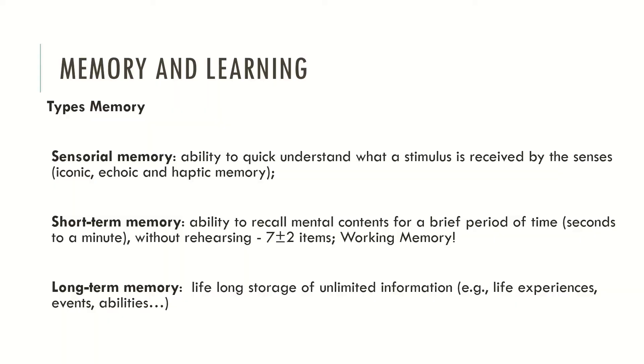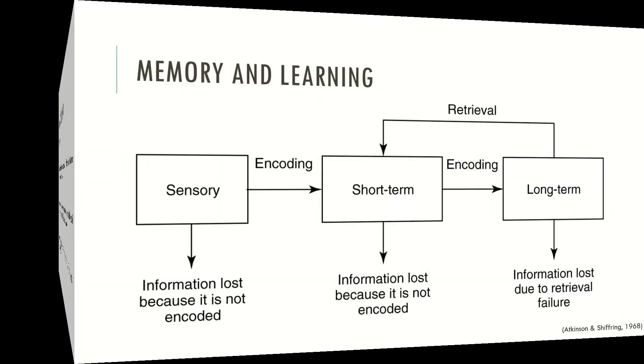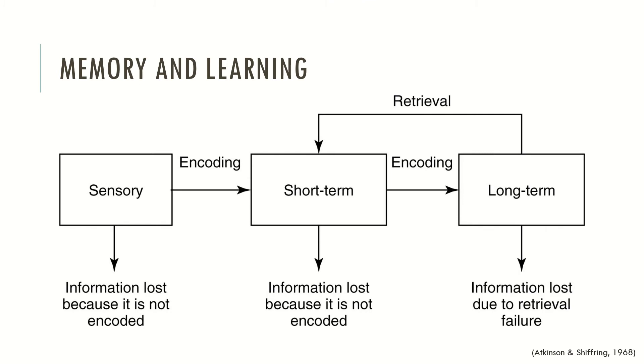Memory is a very important neurocognitive process because without memory, we would not be able to recall and remember all the things that made us who we are. For example, Alzheimer's disease is a condition where individuals start to lose their memory abilities, typically affecting episodic memory — individuals start to lose the ability to recall things from their life and can't even recognize their spouse. We can look to the model of Atkinson and Shiffrin, which describes the process model of memory formation.